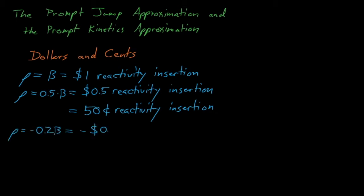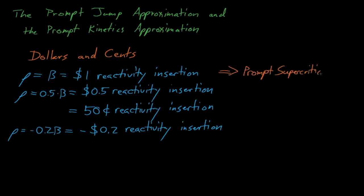It's important to note that a reactivity insertion that exceeds one dollar causes the reactor to become prompt supercritical, which means that the system no longer requires delayed neutrons to maintain criticality, and that its power will increase rapidly. Generally, power reactors are designed to operate either in the subcritical range, the delayed critical range, or the delayed supercritical range. Power reactors are almost never exactly critical — they're always oscillating between being slightly subcritical and slightly supercritical, but never prompt supercritical.